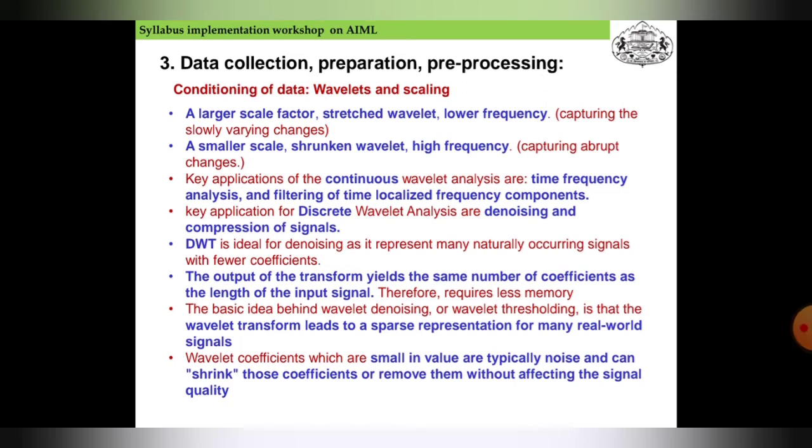A small scale shrinks the wavelet producing high frequency. A key application of continuous wavelet analysis is time-frequency analysis and filtering of time-localized frequency components. Key applications for discrete wavelet analysis are denoising and compression of signals. DWT is ideal for denoising as it represents many naturally occurring signals with fewer quality coefficients.